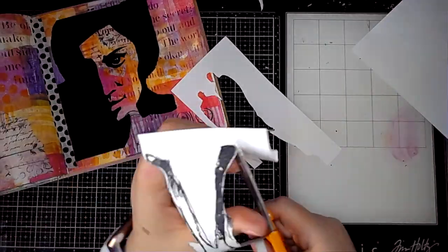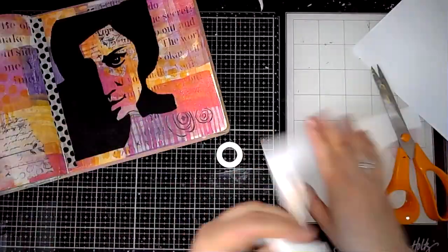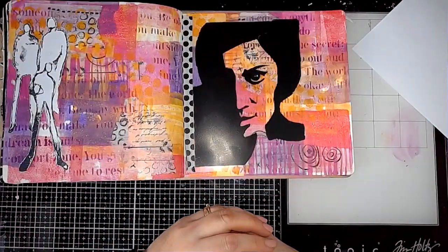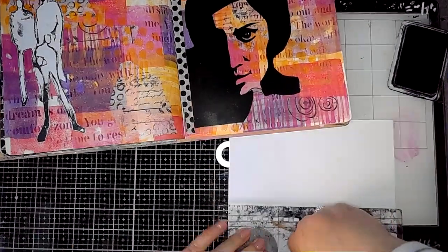So once I fussy cut this out, the next thing I did was to stamp out some of the circles from the same stamp set. Again, I just stamped them onto printer paper.